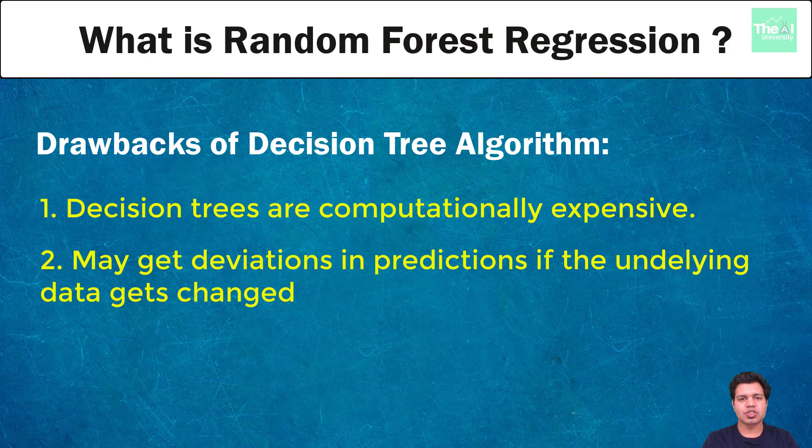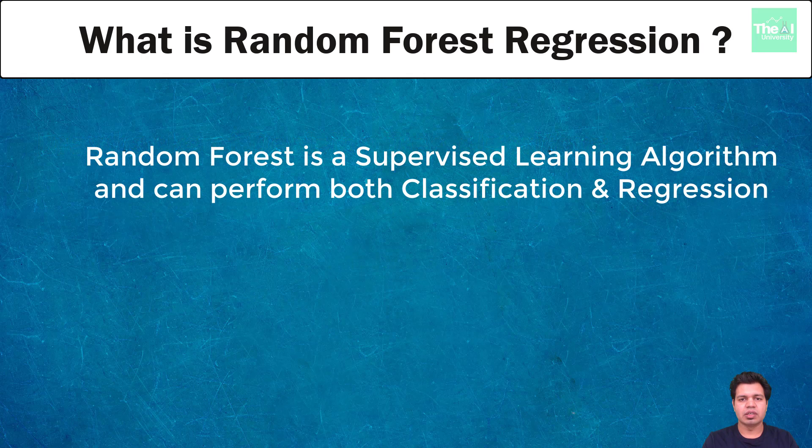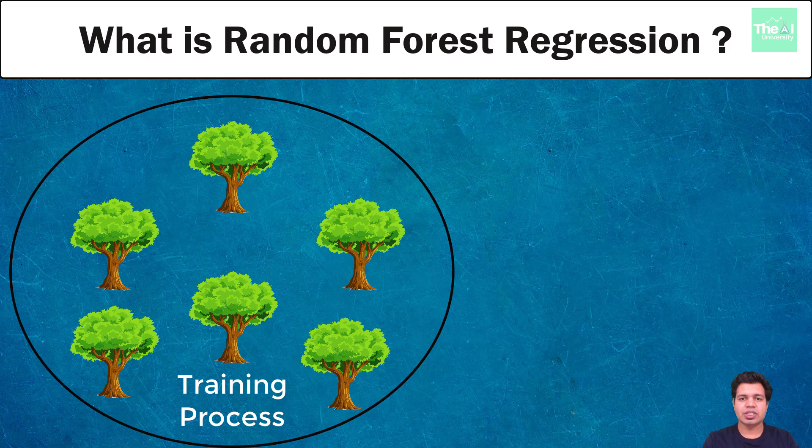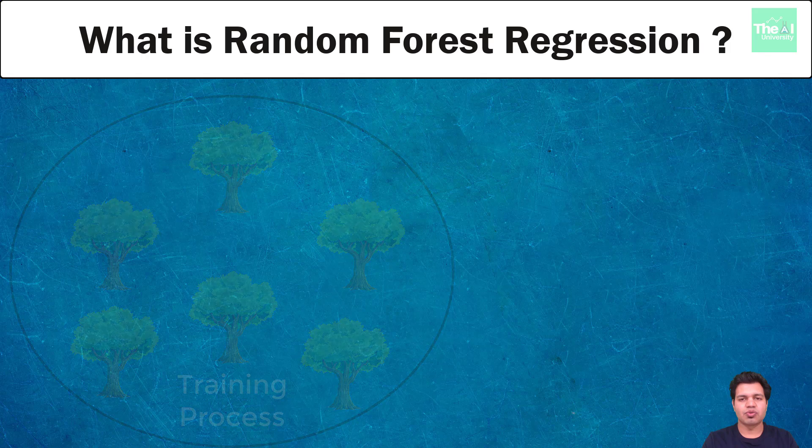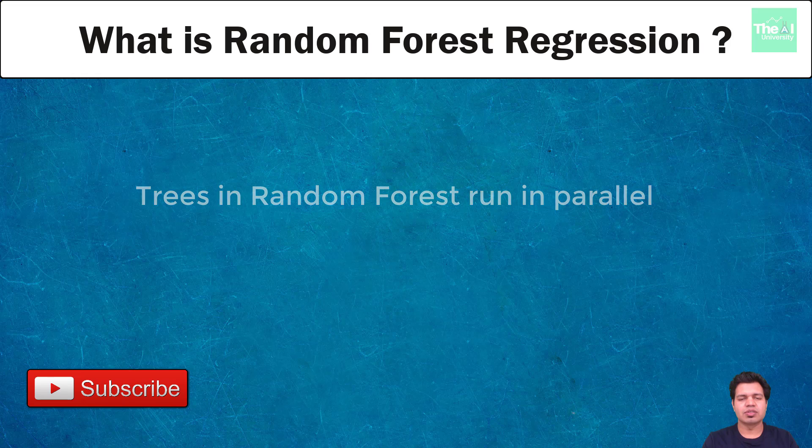Random forest caters this problem. It is a supervised learning technique which makes use of ensemble learning to perform both regression and classification tasks. It constructs multiple decision trees at training time and combines the result of predictions from each decision tree to determine the final output. That output can be in terms of classification or regression. Please note that the trees in the random forest run in parallel only.